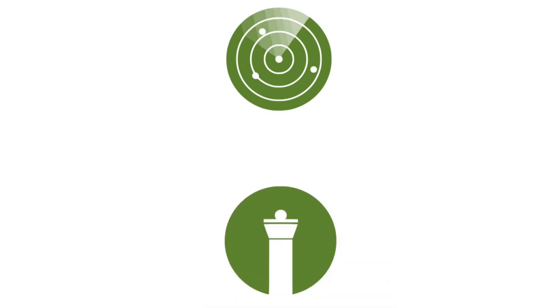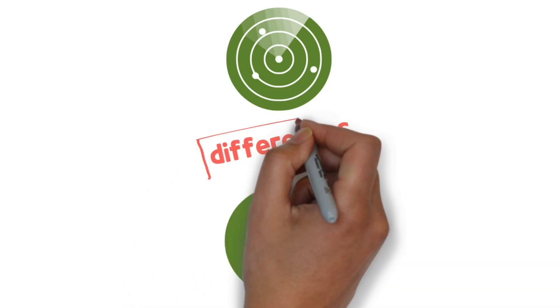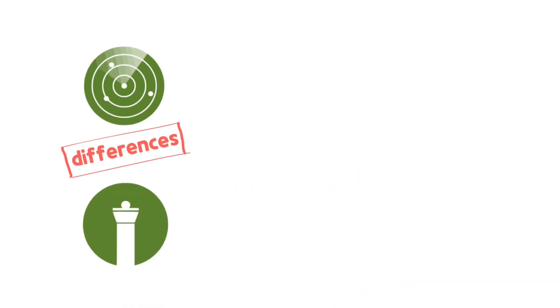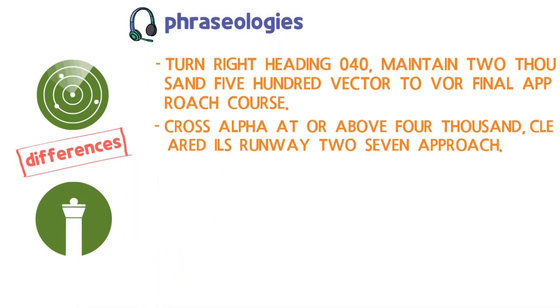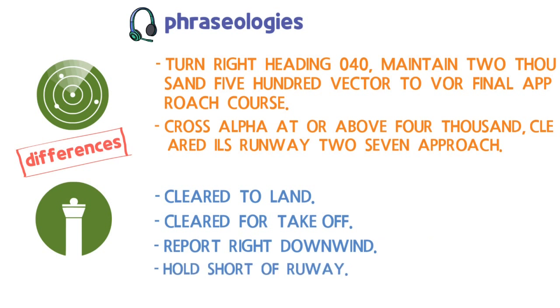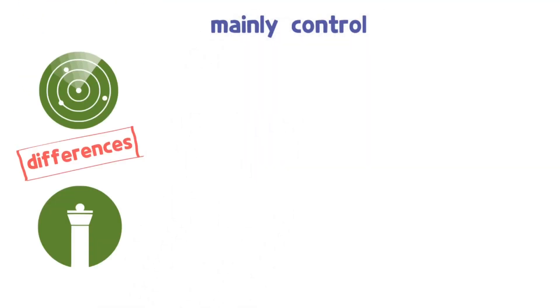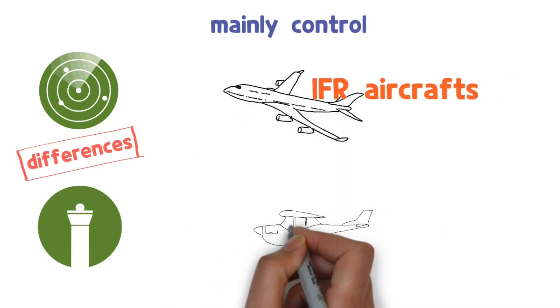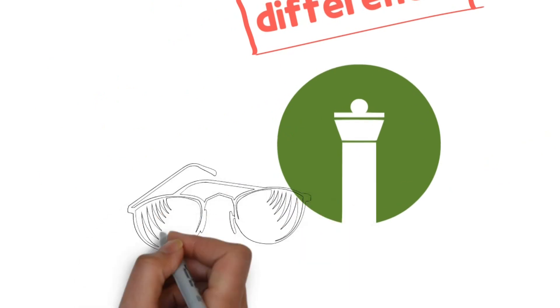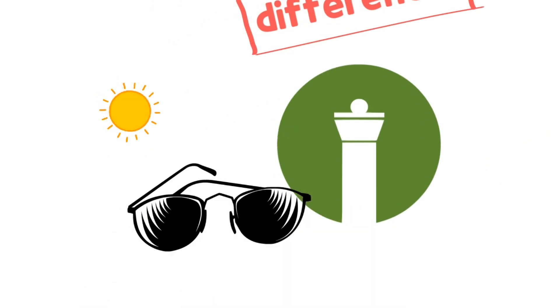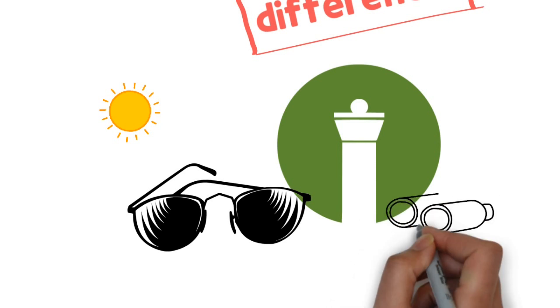Not only that, there are many differences between the tower controller and the radar controller. The phraseologies used by radar controllers is longer than the phraseologies used by tower controllers. Radar controllers mainly control IFR aircrafts and tower controllers mainly control VFR aircrafts. Sunglasses are necessary for tower controllers who are always exposed to sunlight through glass windows.